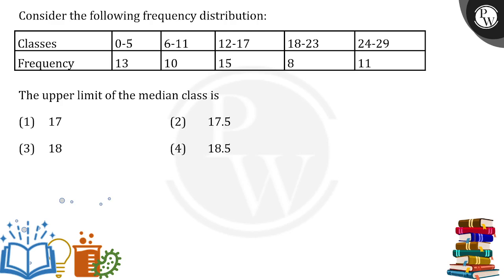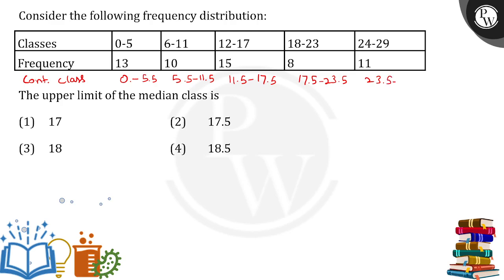We need to form continuous classes from the given data. For 0 to 5, we take the average of the boundaries, giving 0 to 5.5. The next continuous classes would be 5.5 to 11.5, then 11.5 to 17.5, then 17.5 to 23.5, and finally 23.5 to 29.5.